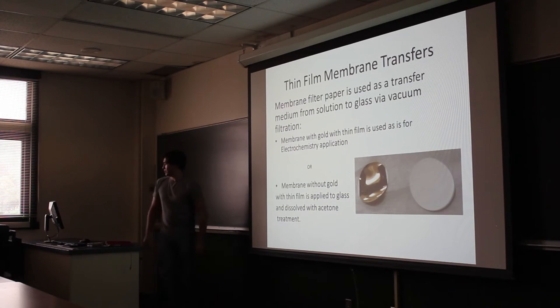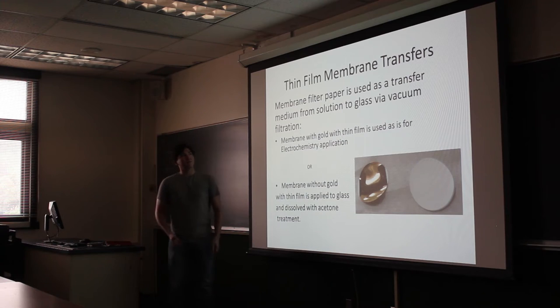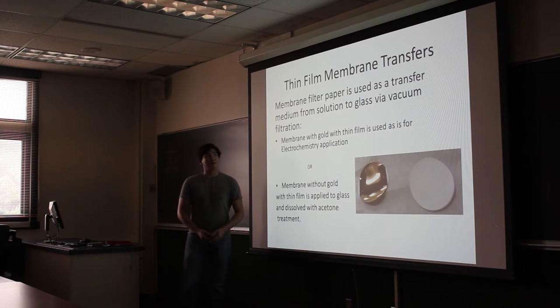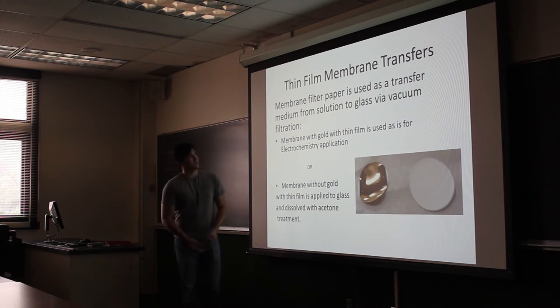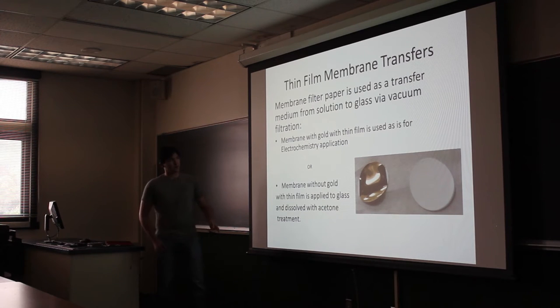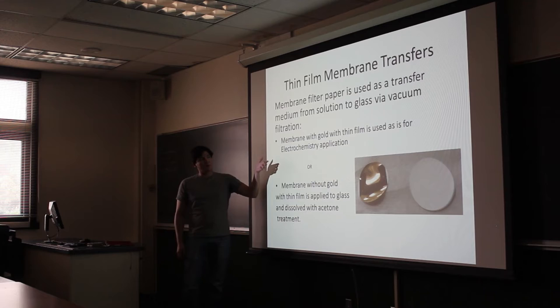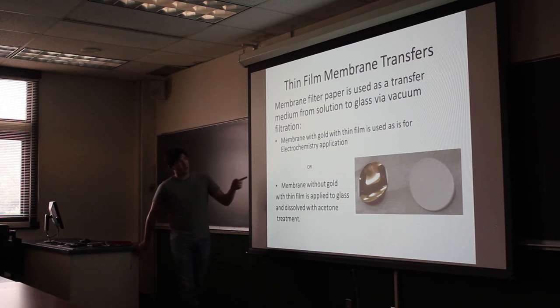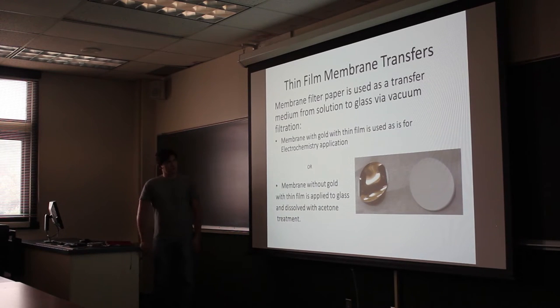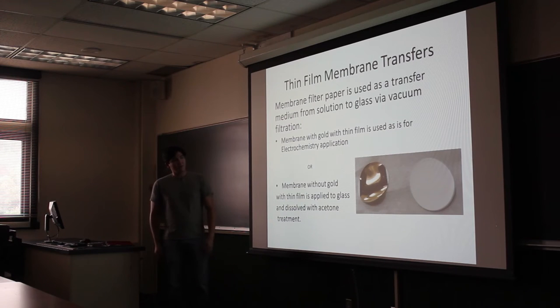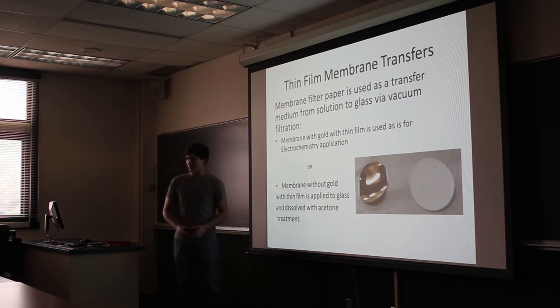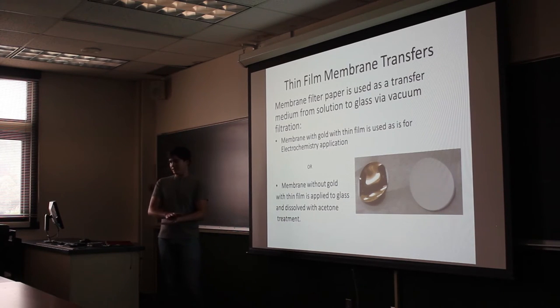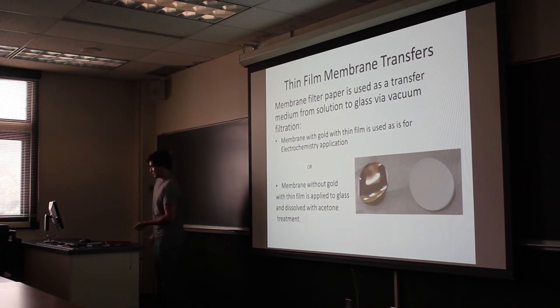With these membrane transfers, we have a 220 nanometer pore size membrane, and then what we've used here are 25 nanometer pore size membranes. I've been making two different types, one with a gold membrane or gold film on it, and the gold is 25 nanometers thick. That's the one on the left. With that, we make our electrodes for our electrochemistry application. The one on the right is for just applying to glass. We take our nanotubes which are on the membrane, put it on a glass slide, and then we can dissolve the membrane with an acetone treatment.